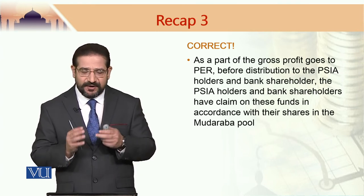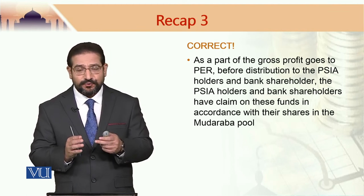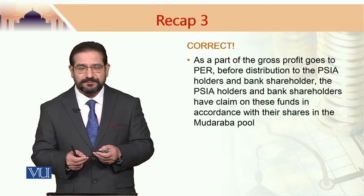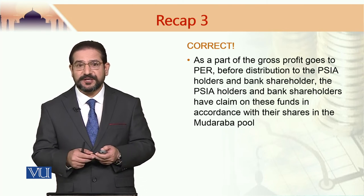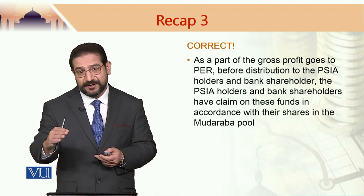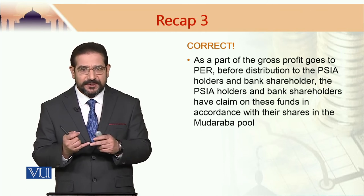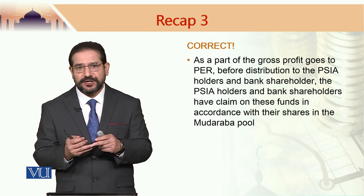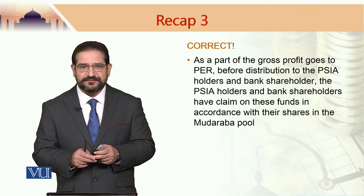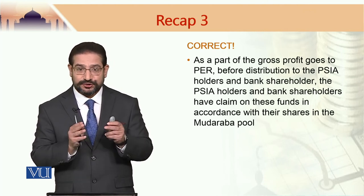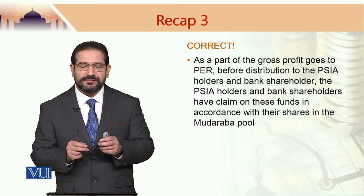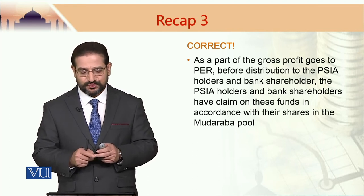As you know, when the profit realized is put into profit equalization reserve, at that point in time there is no distribution between the bank shareholders and the profit sharing investment account holders. The bank's management share has already been deducted. However, those who contribute to the Mudaraba pool — i.e., profit sharing investment account holders and shareholders of the bank — their distribution doesn't take place. So whatever is in the profit equalization reserve belongs to these two groups, i.e., PSIA holders and shareholders of the bank, in accordance with their share in the Mudaraba pool. So this is the correct answer.